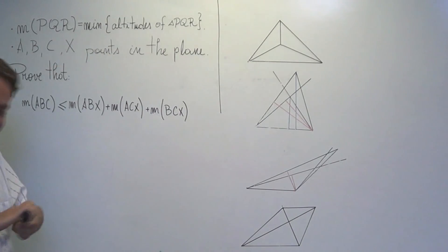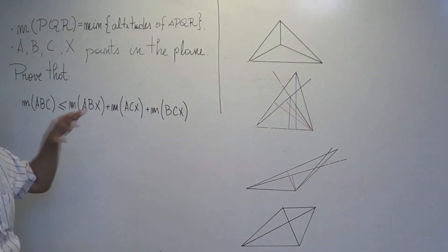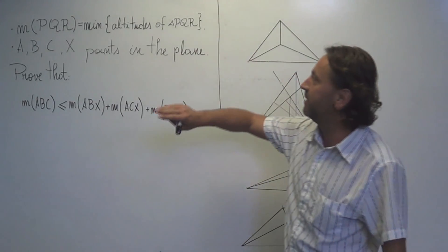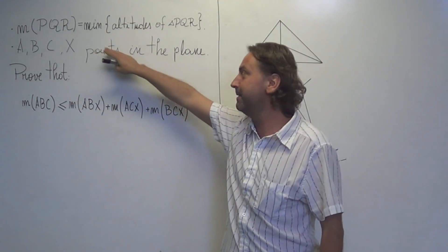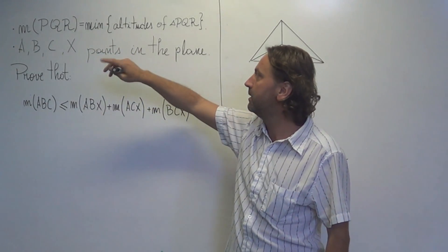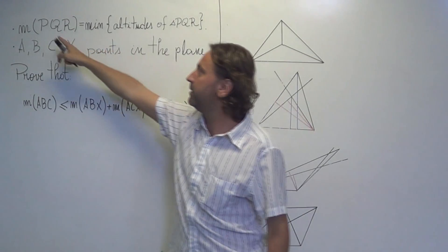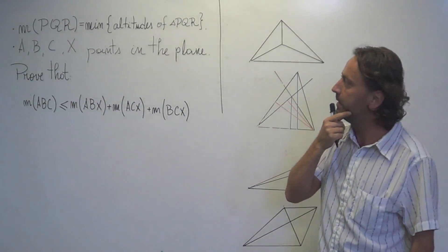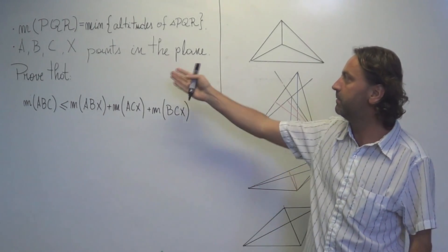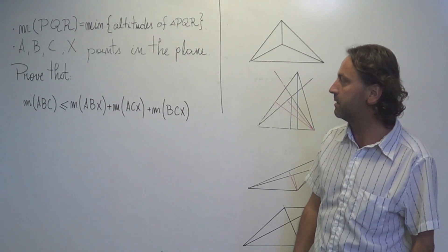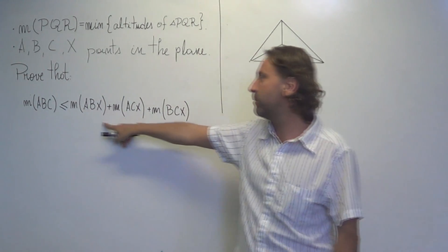Okay, I will present the solution of the following problem. The problem is this: if you have three points in the plane, P, Q and R, we define M of PQR to be the minimum of the altitudes of the triangle PQR. And then if we take four points in the plane, A, B, C and X, we want to prove that we have this inequality.